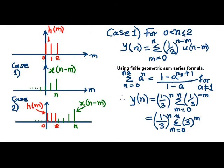There arise two cases. In the first case, both x(n-m) and h(m) they overlap from the lower limit 0 up to the upper limit which is decided by n.